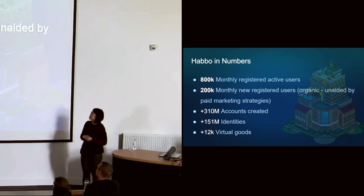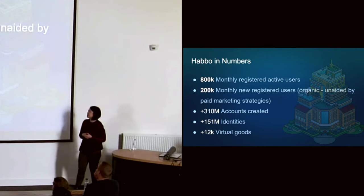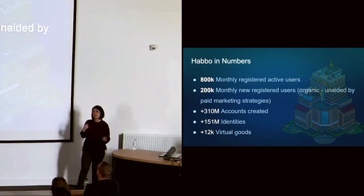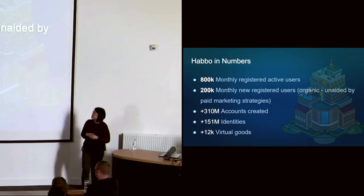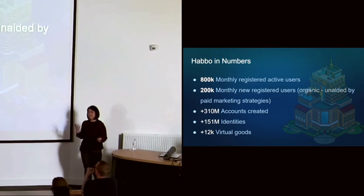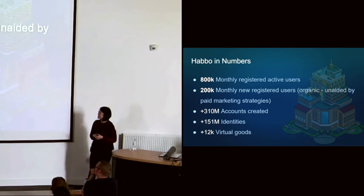Let's look at some numbers. We have 800,000 monthly registered users coming in every month. We have 200,000 new users coming in and that is at an organic rate, meaning it's not based on paid marketing strategies. It's all new people coming in — roughly like people coming in to fill Wembley Stadium, two of them, with some leftover still queuing up outside. That's the scale of it.